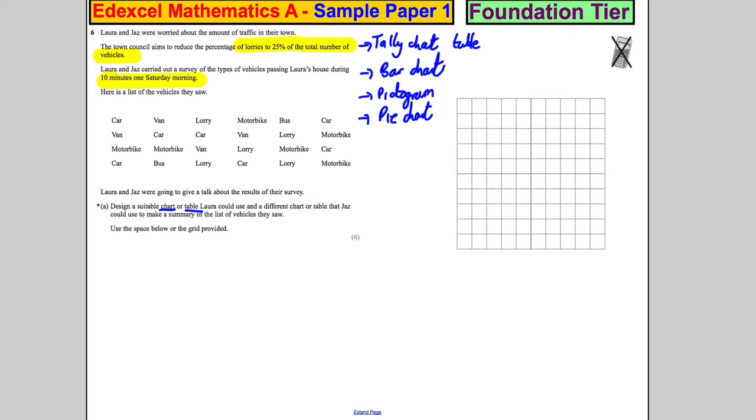So you know what I do? I do the simple. I do a tally chart, which is easy, and a bar chart. So let's do that. Let's do a tally chart first of all. So we'd have the vehicle, the type of vehicle, and we'd have a tally where we tally them up, and we'd have a frequency where we count them up. Simple as that. Dead easy.